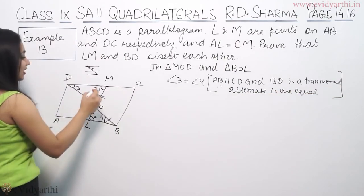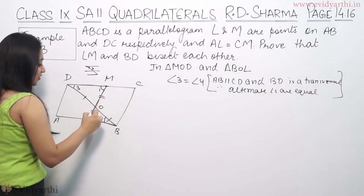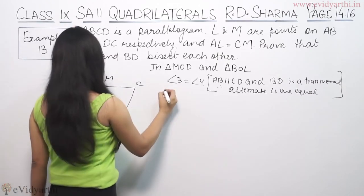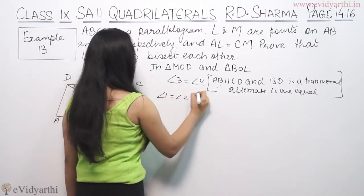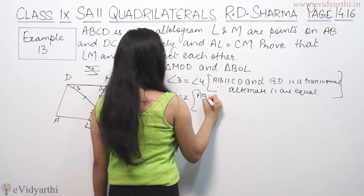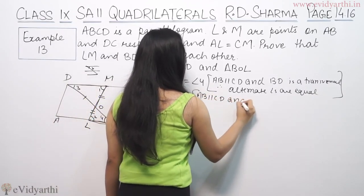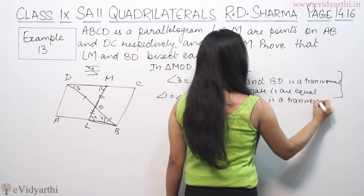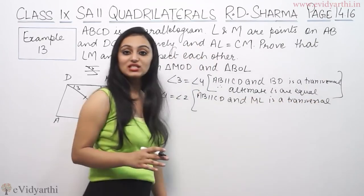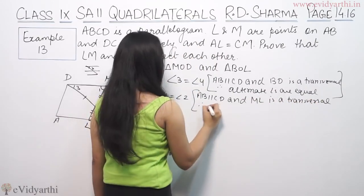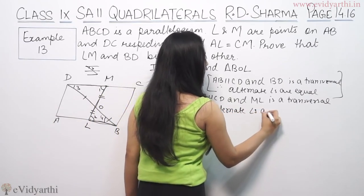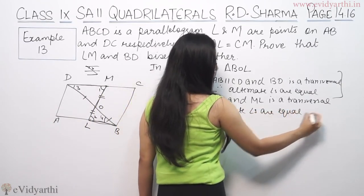Similarly, here is angle 1 and angle 2. Here we see that ML is a transversal. So angle 1 is equal to angle 2. The reason AB is parallel to CD and ML is a transversal. Therefore alternate angles are equal.